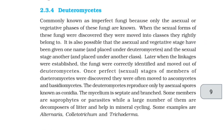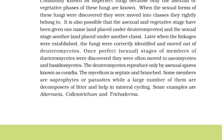2.3.4 Deuteromycetes. Commonly known as imperfect fungi because only the asexual or vegetative phase of these fungi is known. When sexual forms of these fungi are discovered, they are moved into the classes they rightly belong to. It is also possible that the asexual and vegetative stages have been given one name and placed under deuteromycetes, while the sexual stage was given another name and placed under another class. Once the linkage was established, the fungi were correctly identified and moved out of deuteromycetes — often to ascomycetes and basidiomycetes. Deuteromycetes reproduce only by asexual spores known as conidia. The mycelium is septate and branched. Some members are saprophytes or parasites, while a large number are decomposers of litter and help in mineral cycling. Some examples are Alternaria, Colletotrichum, and Trichoderma.